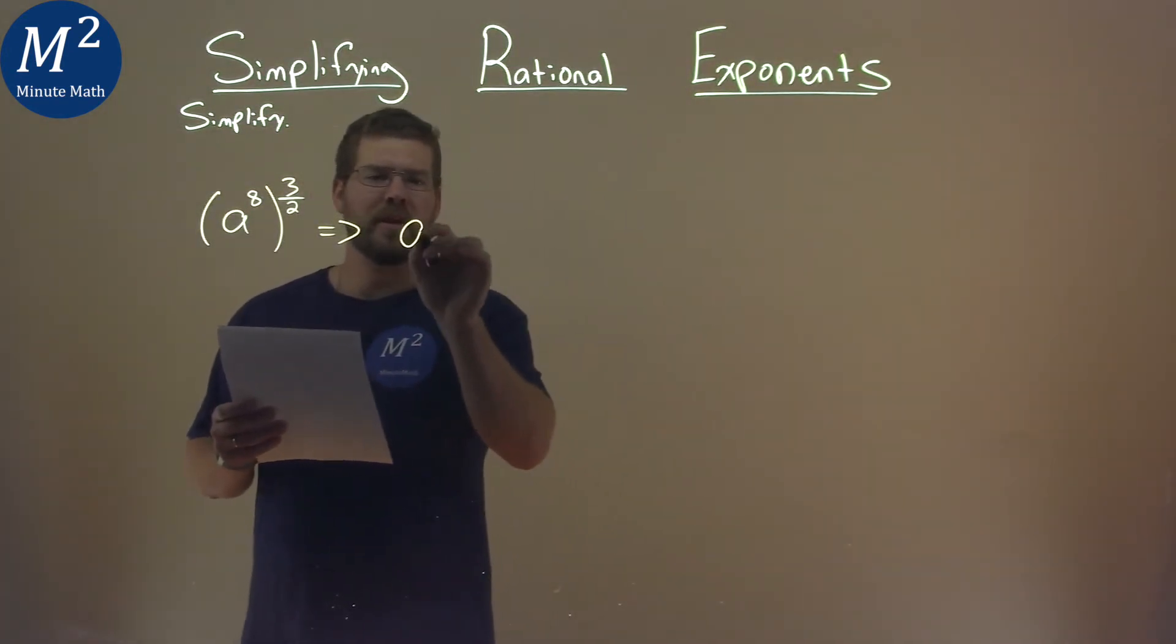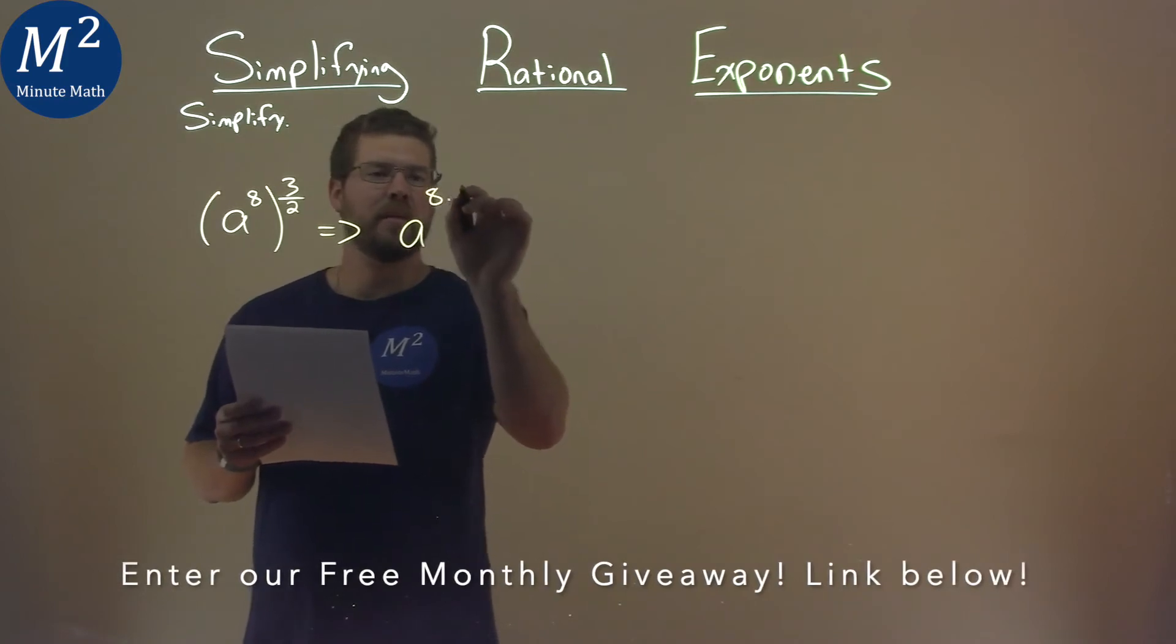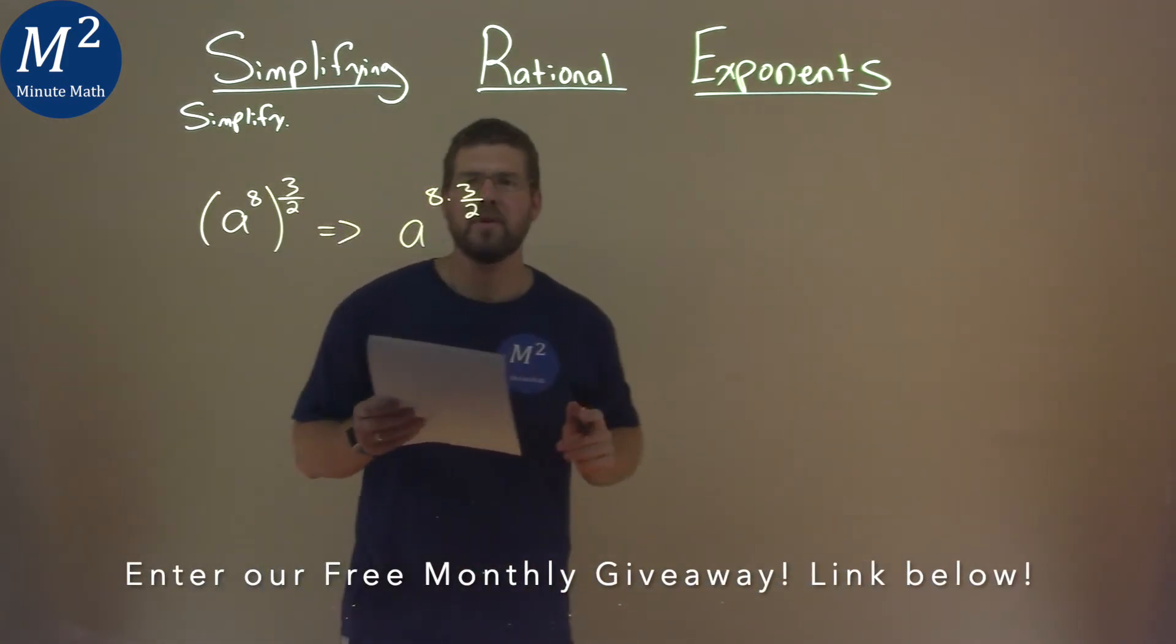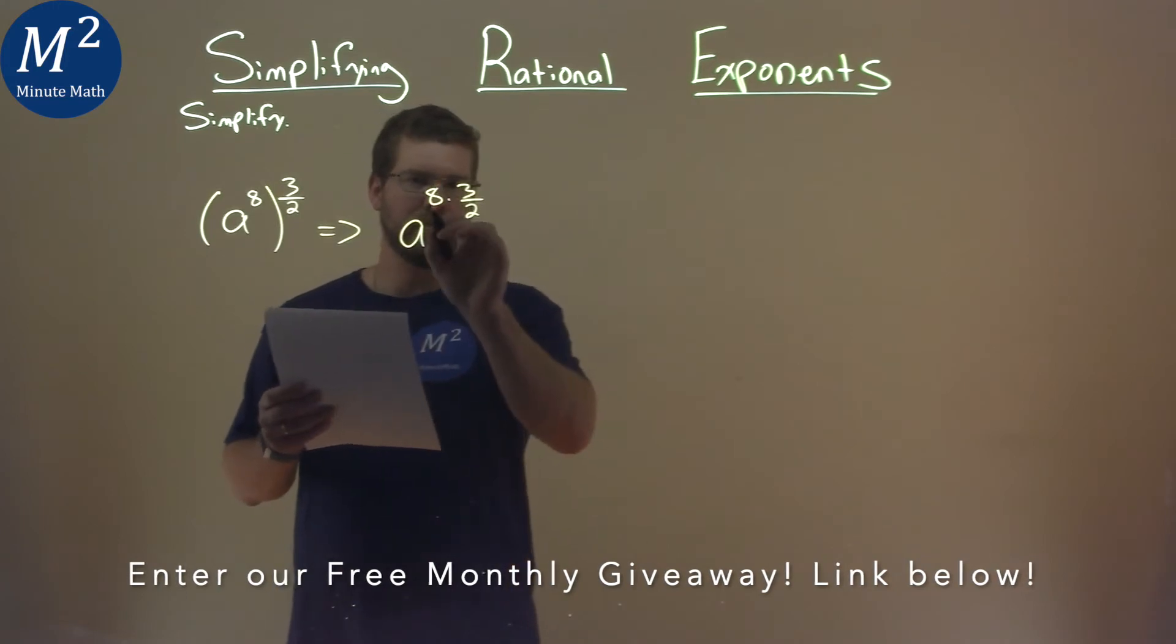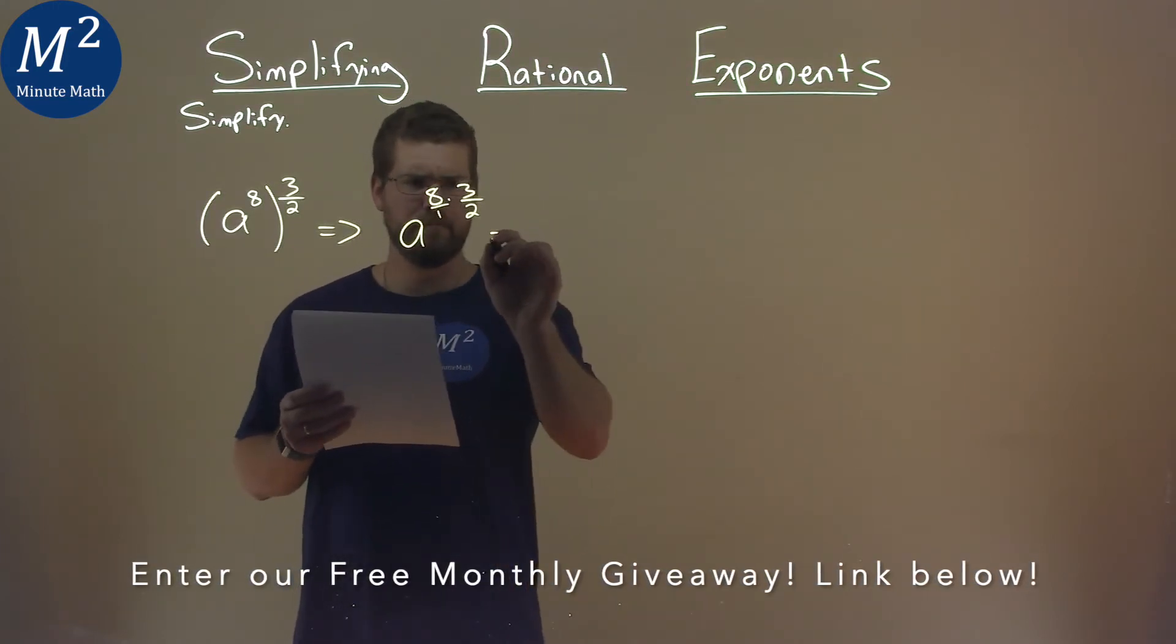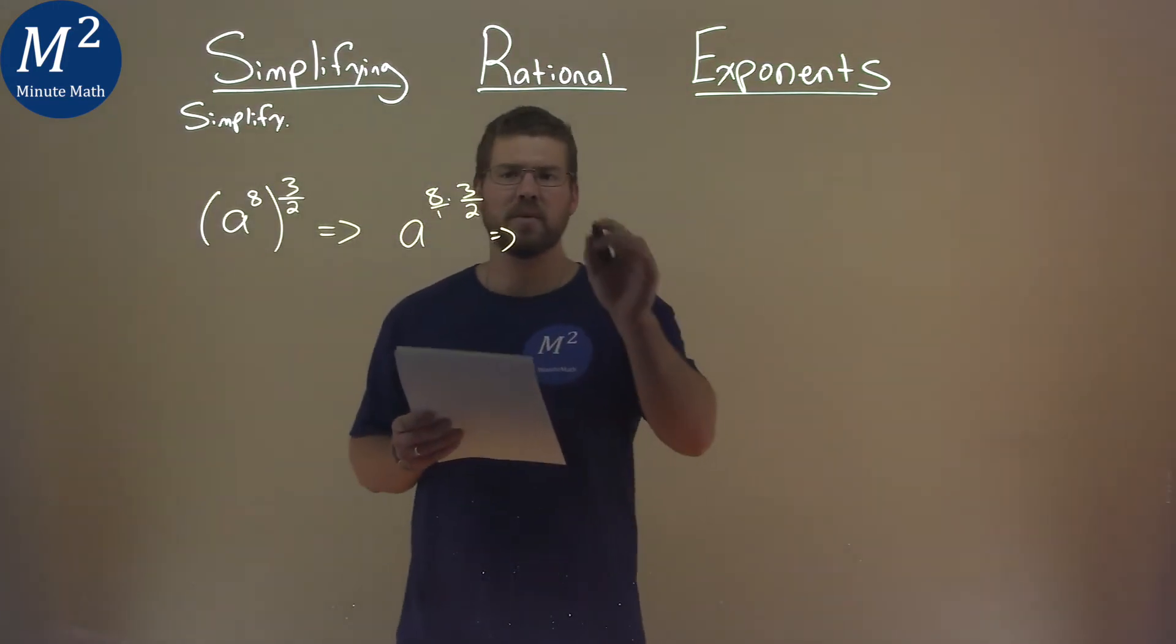So this really is A to the eight times three-halves. We know we multiply across the numerator, right? This is really eight over one, and so eight times three is twenty-four.